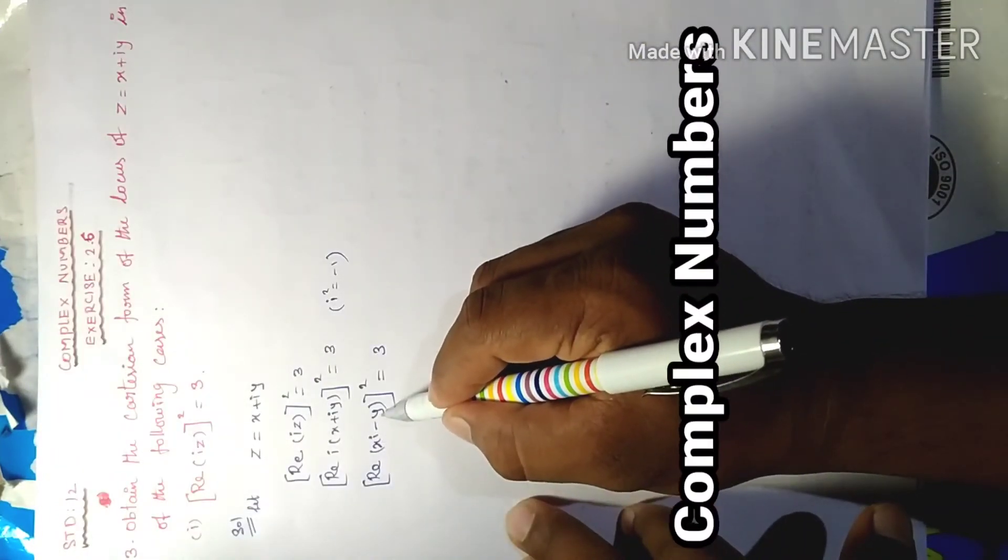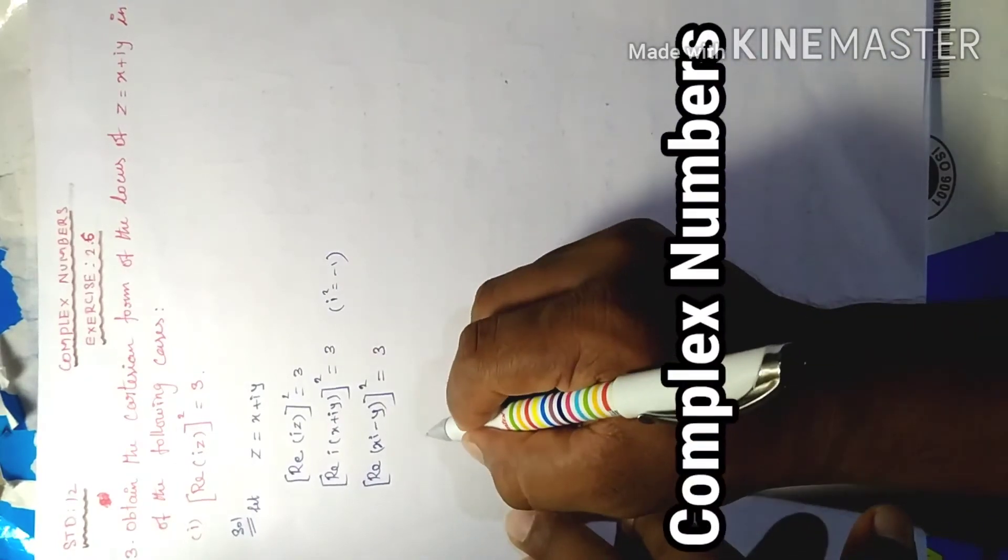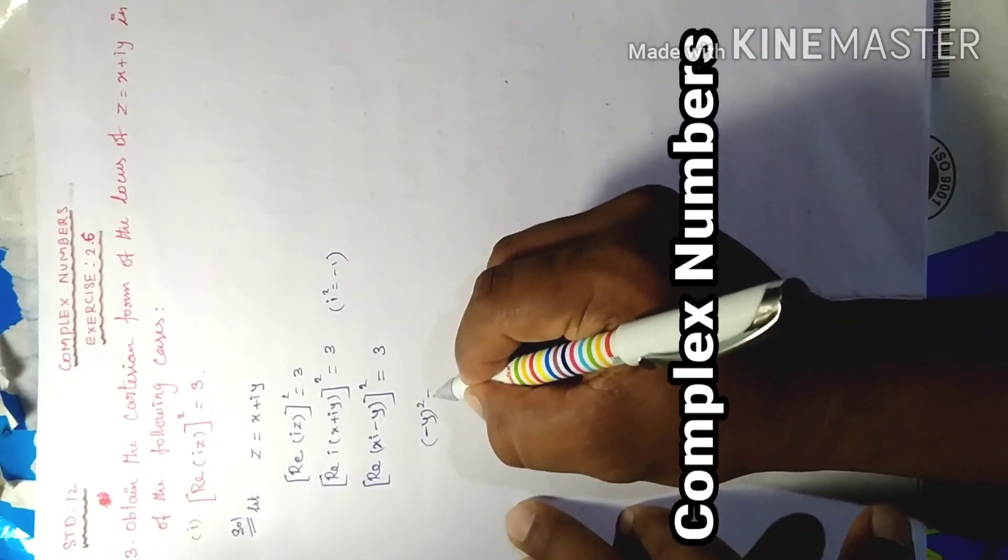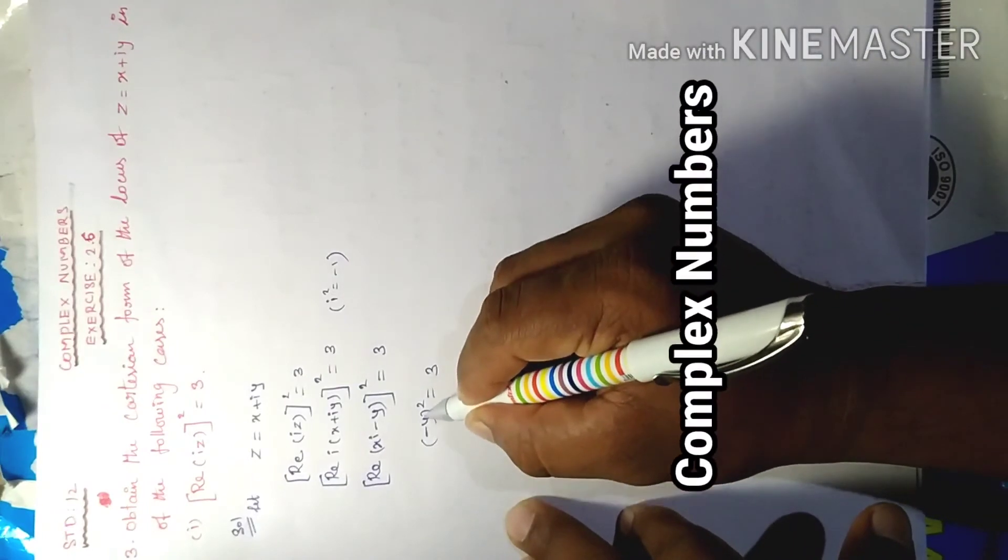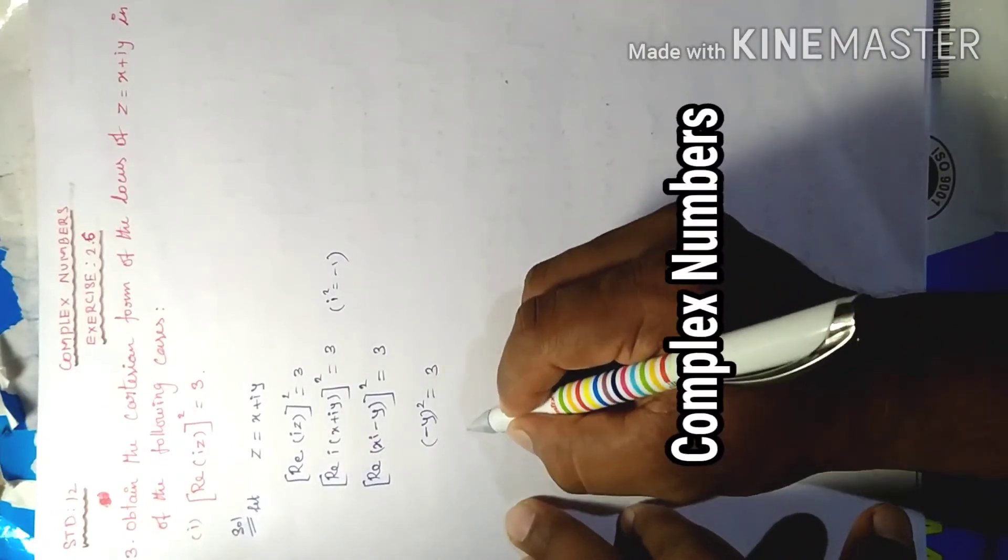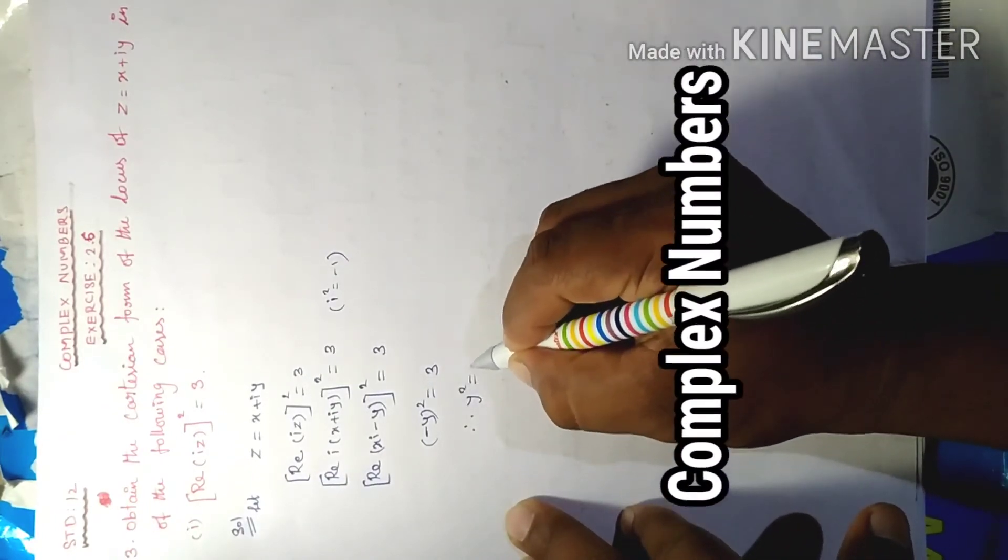That is the real part value. Therefore minus y whole square equal to 3. Minus squared gives plus y square. Therefore y square equal to 3.